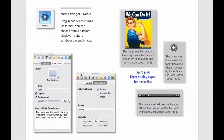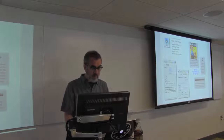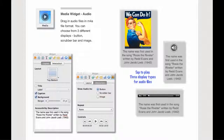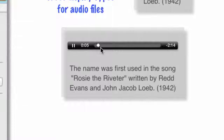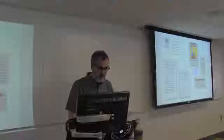The next widget is the audio widget. With this, you can drop in an audio file in an M4A format. There are actually three different ways to display it. One down here in the lower right is a scrubber — you'll see there's a little bar and I can move this along. You can also have it display as an image. So there are a couple of different ways to integrate an audio widget.